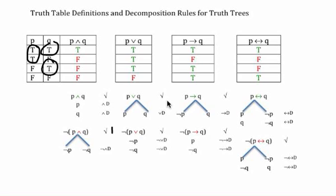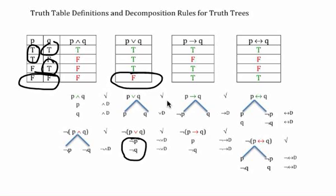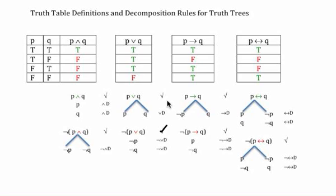Since there are three different ways for the disjunction to be true, there is only one way for it to be false, so the negated disjunction is going to stack. On that one line of the truth table, p is false and q is false, so we stack not-p on top of not-q, justify those by reference to the negated disjunction decomposition rule, and check it off to indicate we're done.